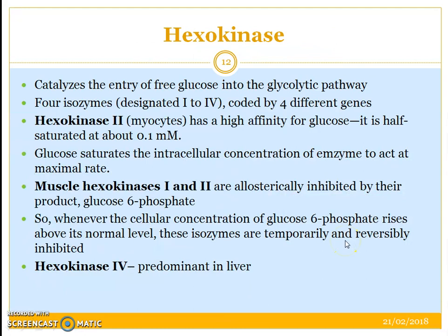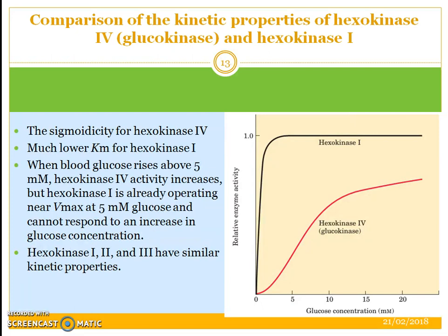The next enzyme is hexokinase, responsible for catalyzing the entry of free glucose into the glycolytic pathway. It has four isozymes — 1 to 4 — coded by four different genes. Hexokinase 2, found in myocytes, has a high affinity for glucose, whereas muscle hexokinases 1 and 2 are allosterically inhibited by their product, glucose 6-phosphate. As compared to hexokinase 4, the properties of hexokinases 1, 2, and 3 are much similar. The Km values for hexokinase 1 are much lower compared to hexokinase 4.